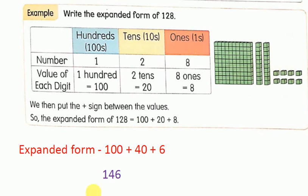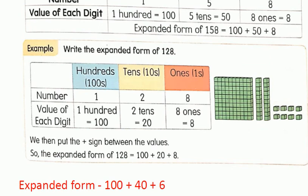Children, to write the expanded form of any number, first we have to write the value of each digit and then put the plus sign between them. Now, can you write the number whose expanded form is 100 plus 40 plus 6? Think about the value of each digit: 100 makes 100, 40 means 4 tens, and 6 means 6 ones. So the number is 146.